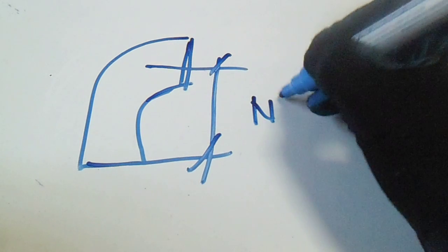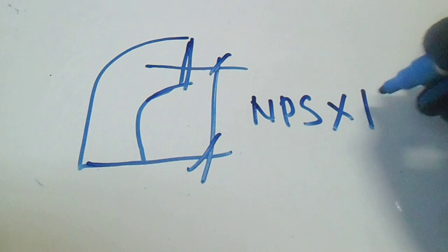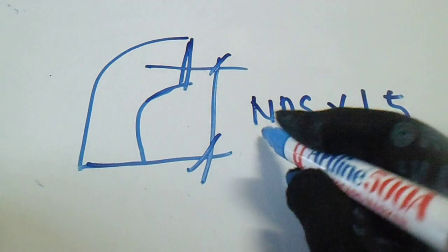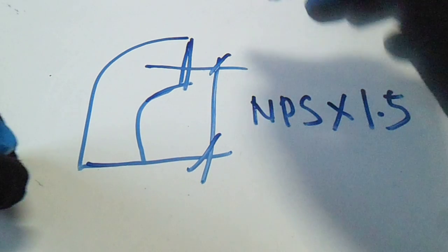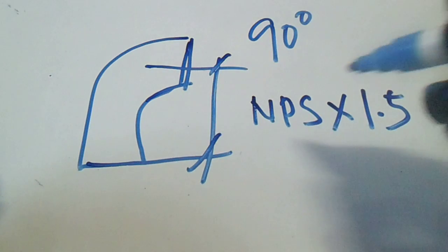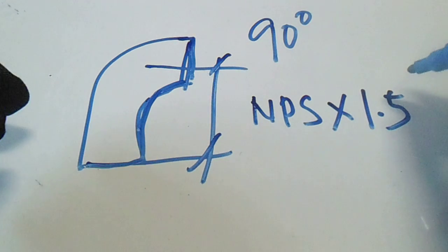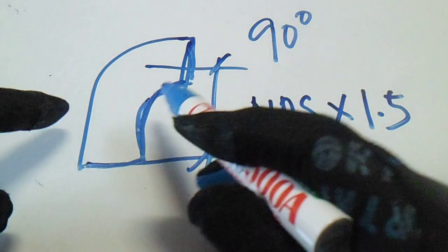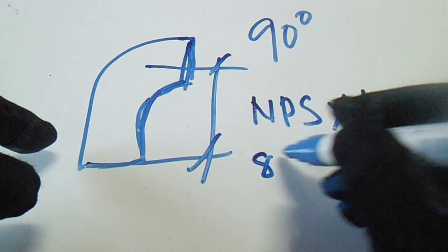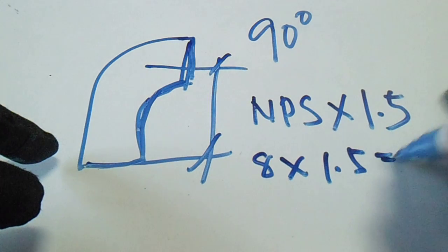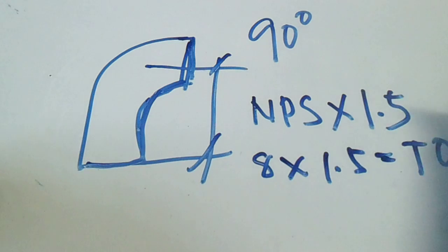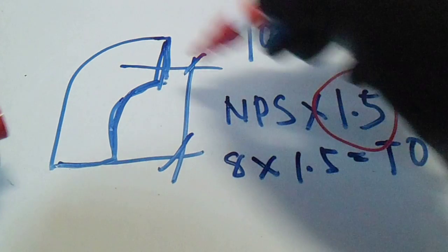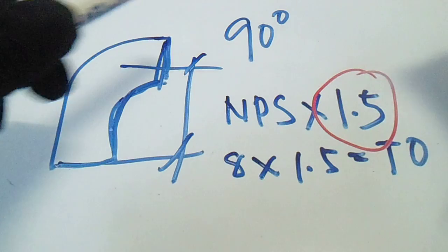For the 90 degrees elbow, the formula is NPS multiplied by 1.5, where NPS is the nominal pipe size. So this is a 90 degrees elbow. From this formula, NPS times 1.5 gives the center of the 90 degrees elbow. For example, 8 times 1.5 equals 12. This is the take-off, but this is the old way to find the take-off of a 90 degrees elbow.